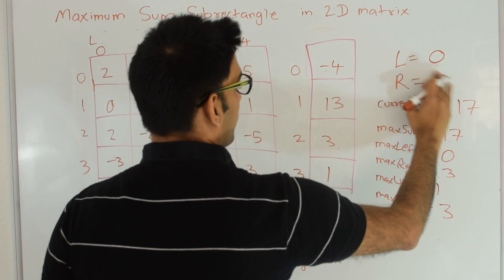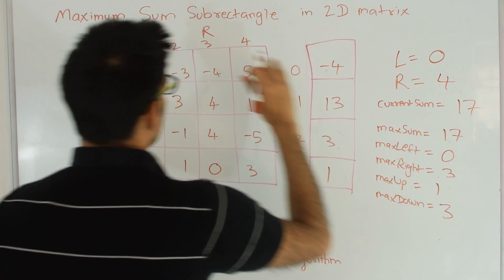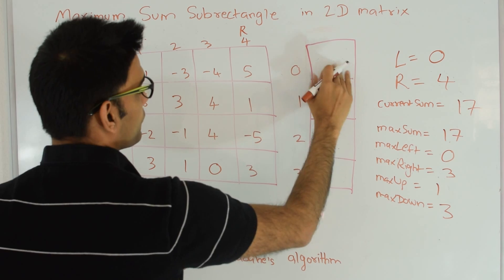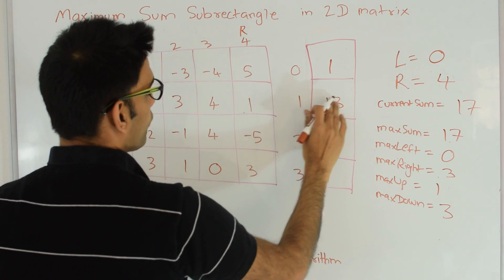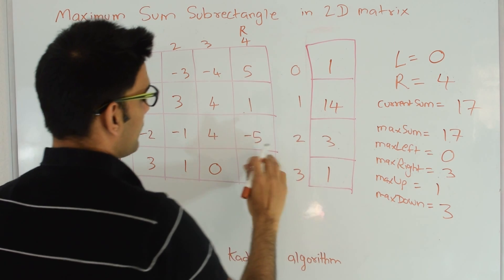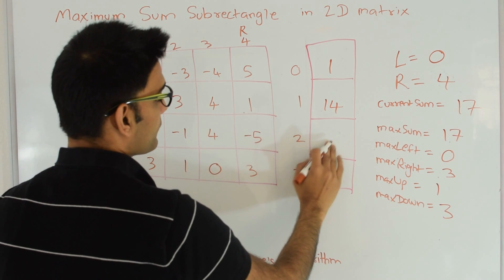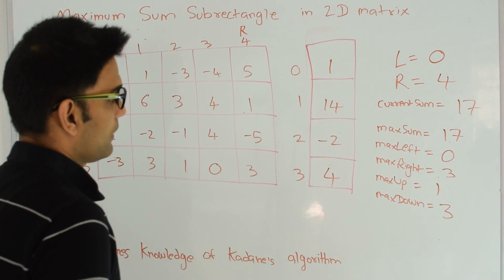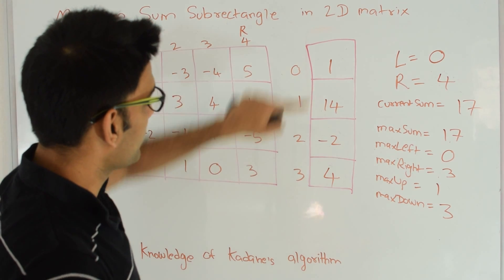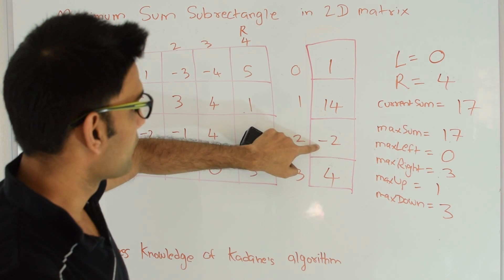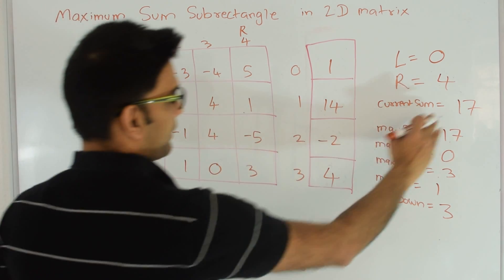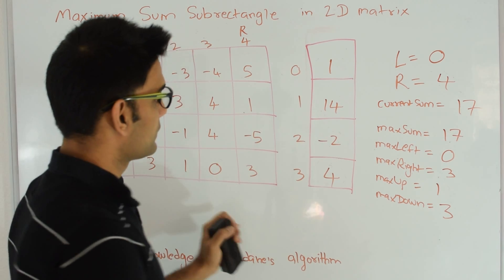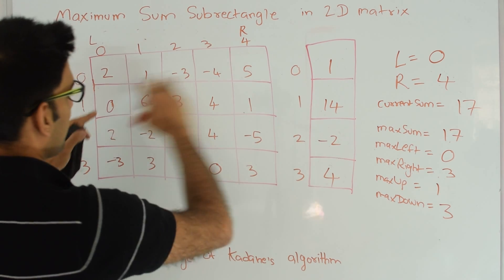We increment right to 4. We add column 4: -4+5=1, 13+1=14, 3+(-5)=-2, 1+3=4. Applying Kadane's algorithm: 1+14=15, 15-2=13, 13+4=17. Current sum is 17, which is not greater than max sum 17, so we do nothing. We are done with the left=0 iteration.